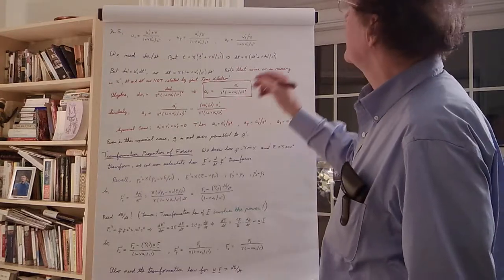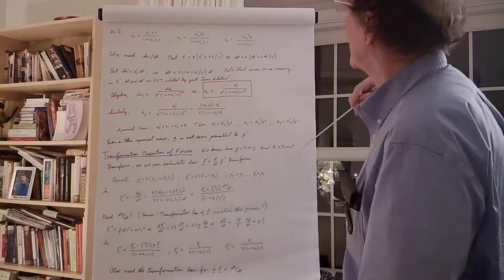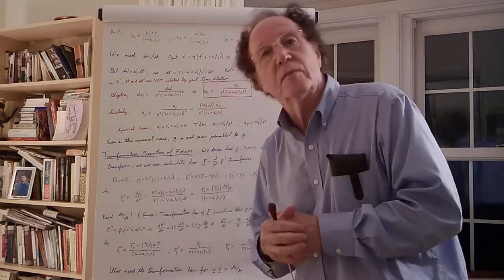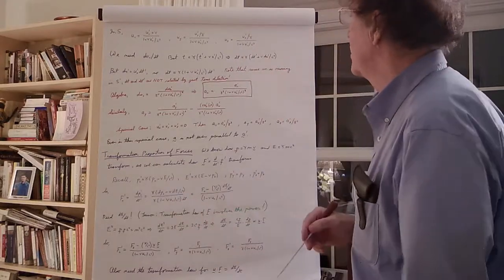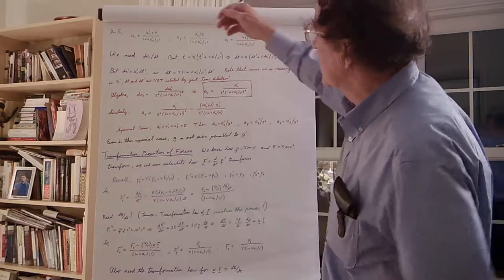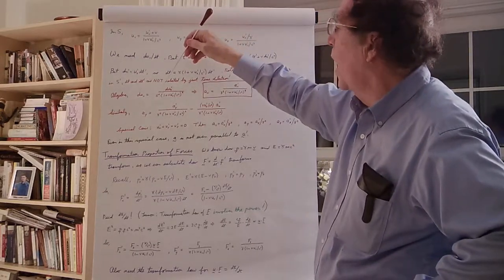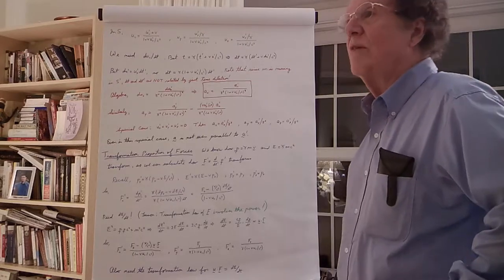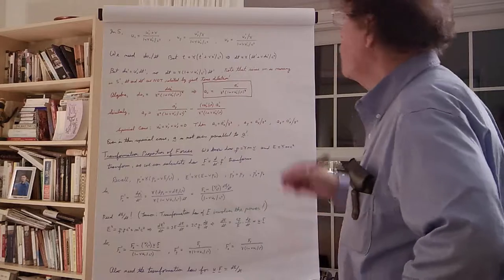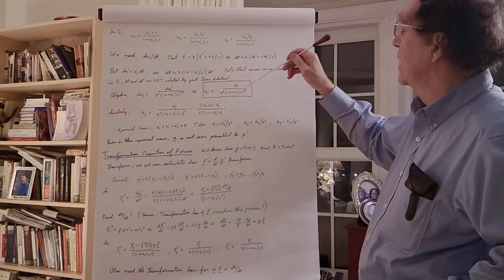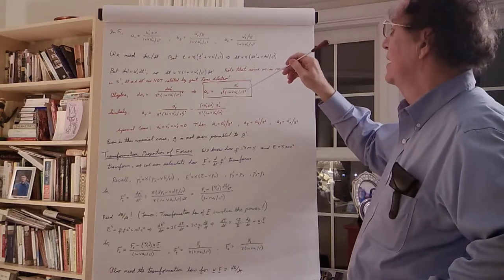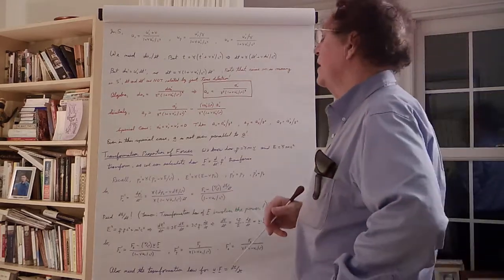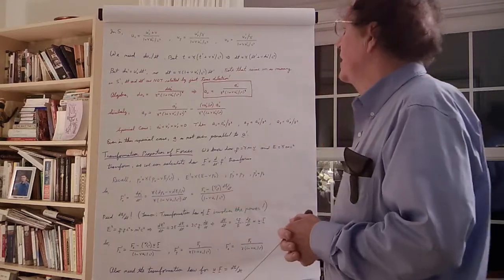Similarly, I can do the same for the acceleration in the Y direction — that one's even a little more complicated — and I get an analogous expression for the Z direction. Y and Z are both transverse to X (the boost direction), so they share the same transformation. What's curious is that the acceleration in the Y direction in frame S gets a non-trivial contribution from the acceleration in the Y direction in S prime with kinematic corrections, but also a contribution proportional to the particle's velocity in Y if it's also accelerating in X.